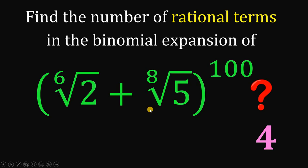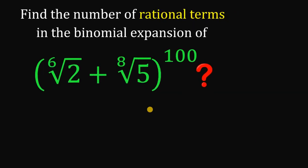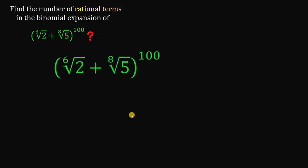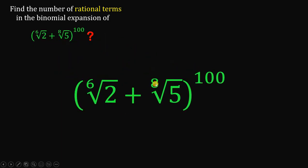Now the question is, how do we get 4? Here's the solution. The first method I provide is the usual way, and I also provide the shortcut method. So let's do first the usual way. Let's consider the expression ⁶√2 plus ⁸√5 raised to 100. Take note that 2 and 5 are prime numbers — we will use that concept later on.